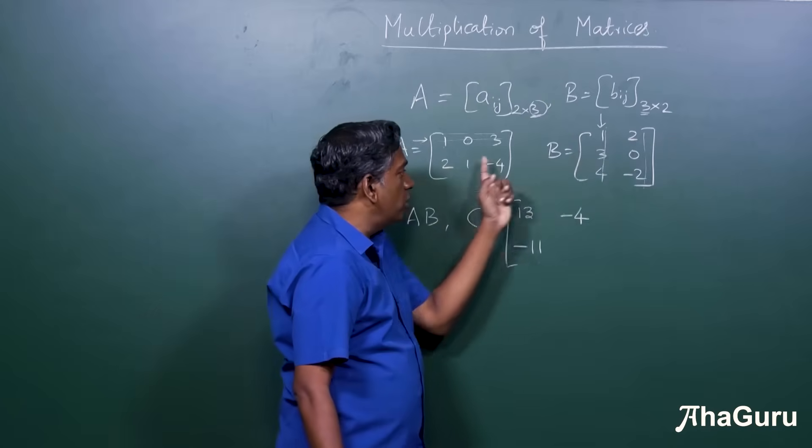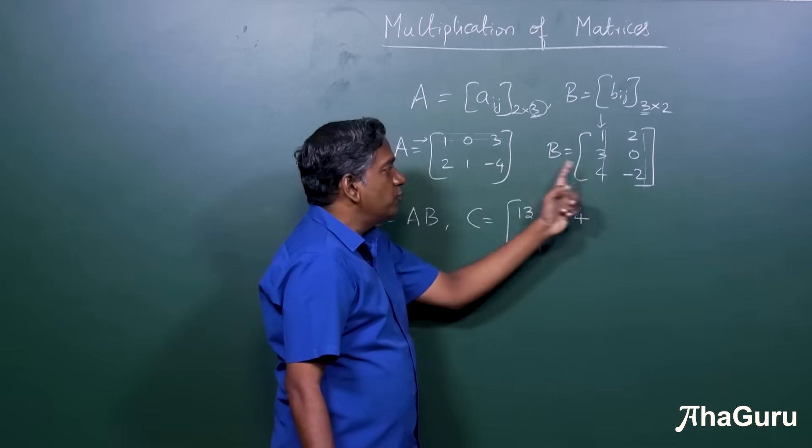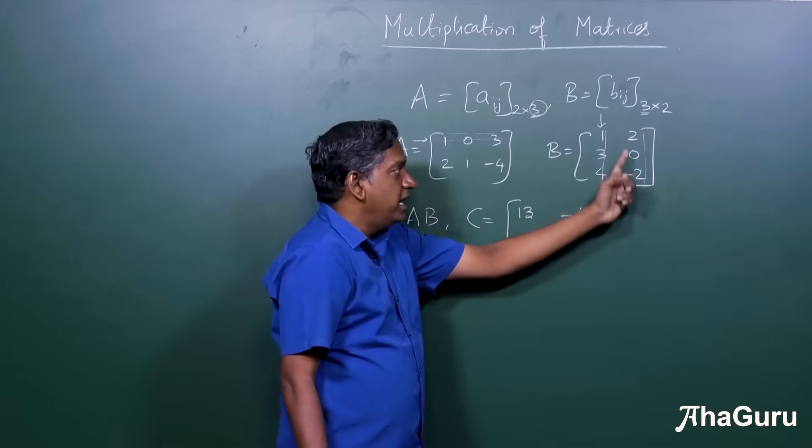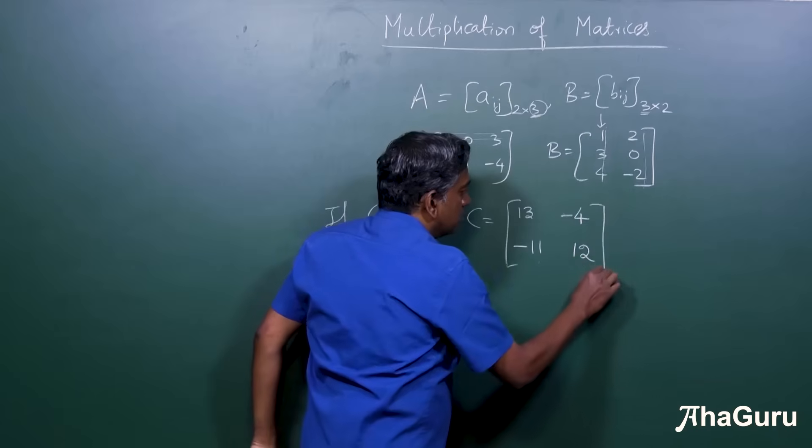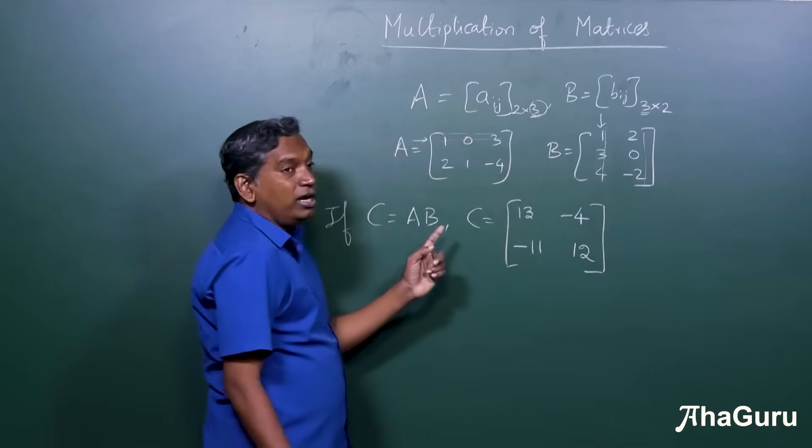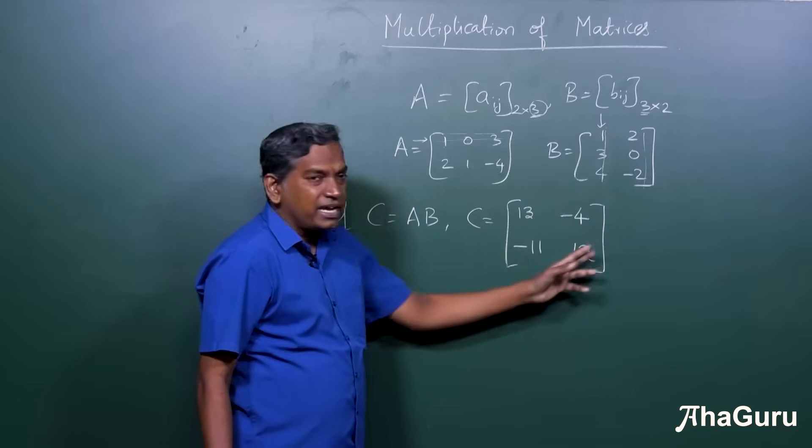Next, 2 into 2, 4, 1 into 0, 0. Minus 4 into minus 2 is 8. 8 plus 4 is 12. So you see how we got? It's a completely different kind of thing.